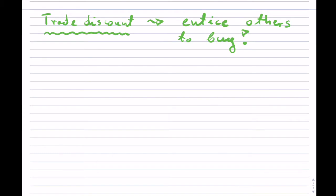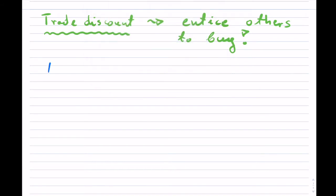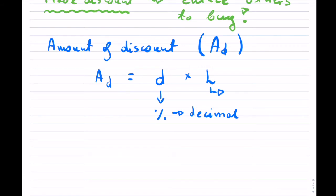A discount is just a discount, and we're used to discounts overall. What a company will do is provide you a certain amount of discount. So the amount of discount — AD — is simply the discount rate D multiplied by your list price. This discount is typically given as a percent, and we convert it back into a decimal when doing our calculations. The list price is in dollars or euros or whatever currency you have, and that calculates your discount.